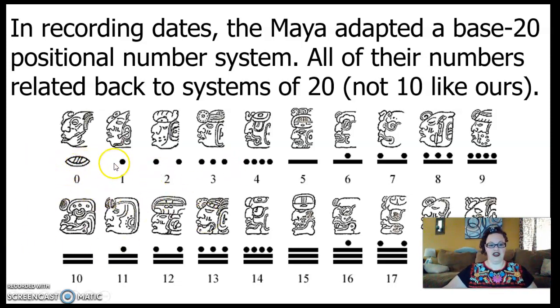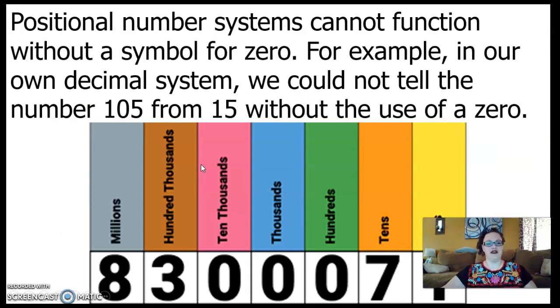So here's some images. And you know what? Actually, let's just get right into it. Positional number systems cannot function without a symbol for zero. For example, in our own decimal system, we could not tell the number 105 from the number 15 without the use of a zero. So this example is 830,007, right? We couldn't, without the number zero, it would just be 8,371. We wouldn't have these zeros in the middle. There would be nothing there to show that even though we don't have any hundreds or thousands or ten thousands, that those place values still exist. We need the zero to be able to show the space between the hundred thousands and the tens.